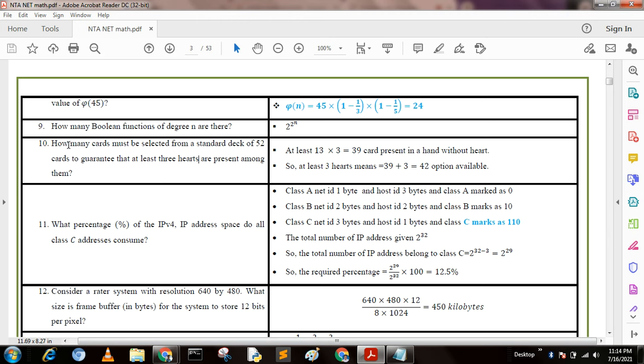Next question: How many cards must be selected from a standard deck of 52 cards to guarantee that at least 3 hearts are present among them? At least 39 cards can be present in a hand without hearts, so at least 3 hearts means 39 + 3 = 42 cards total.